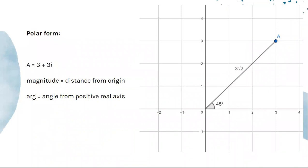Now there's another way of representing complex numbers called polar form. There are two important things here: the magnitude, which is the distance from the origin, also called the absolute value, and there's the argument, which is the angle from the positive real axis.